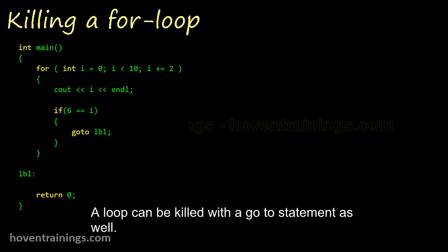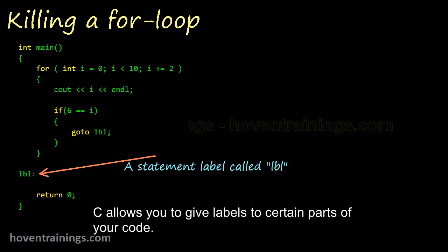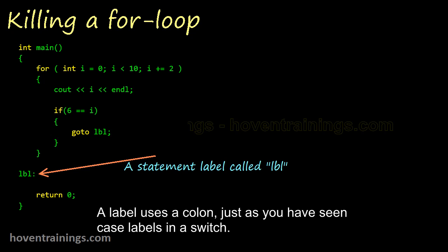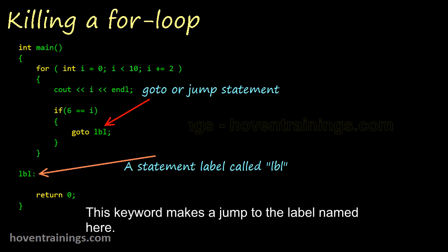A loop can be killed with a goto statement as well. C allows you to give labels to certain parts of your code. A label is any valid identifier. A label uses a colon, just as you have seen case labels in a switch. This keyword makes a jump to the label named here.